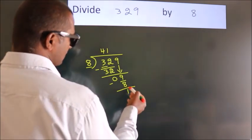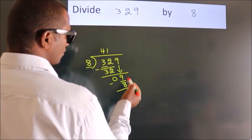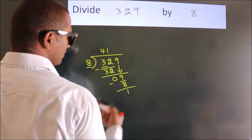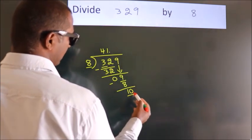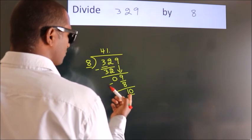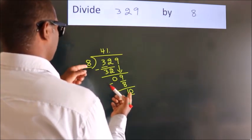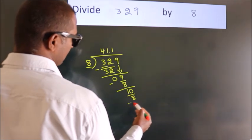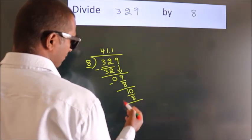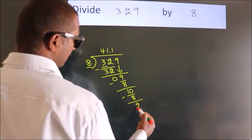After this, no more numbers to bring down. So what we do is, we put dot, take 0. So, 10. A number close to 10 in the 8 table is 8 once 8. Now we subtract. We get 2.